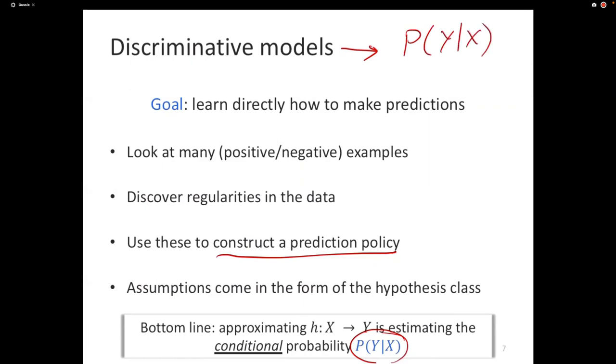So discriminative models are models that try to estimate the probability of y given x. There are a few different ways of writing this, but for the purposes of this lecture, let's just say that anyone that estimates probability of y given x is a discriminative model. We construct this policy of what's the label given a new example. Seems like this is all that we've done.